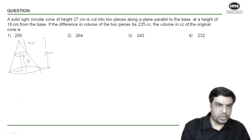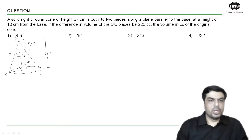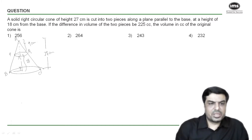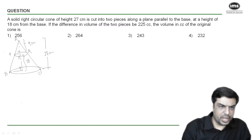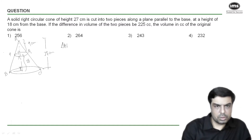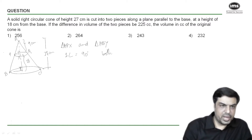Let's label this diagram: we have points A, B, C, P, V, X, and Y. Now let's look at the two triangles APX and ABY. Both triangles have a 90-degree angle. Also, we can see that the angle at the top vertex — the angle at point A — is common to both triangles.